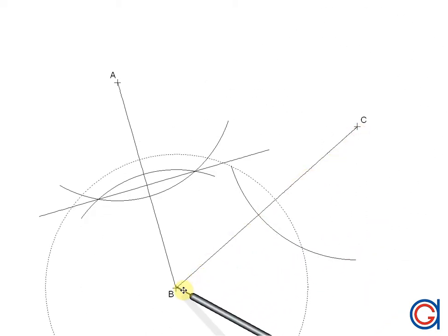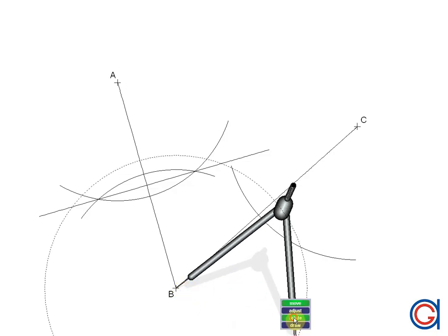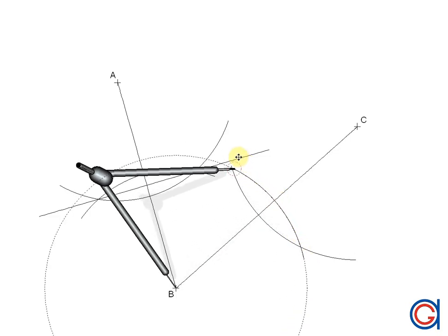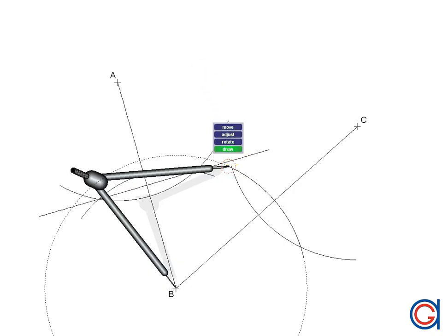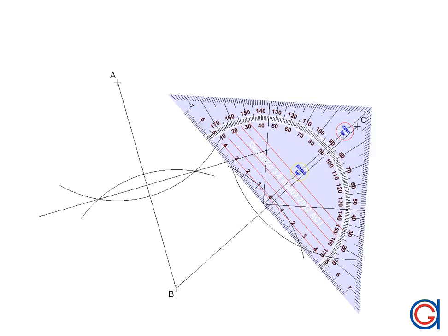And now with the same radius setting our compass on point B, we will scribe another arc, intersecting our previously drawn arc at two points. And again, we will draw the perpendicular bisector through the two intersecting points of the arcs.